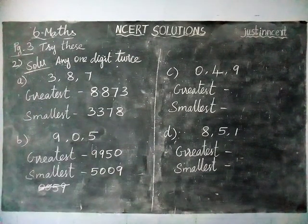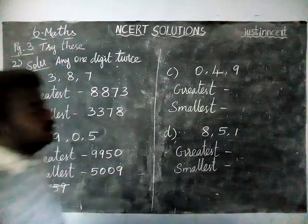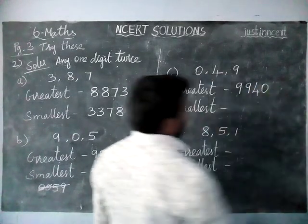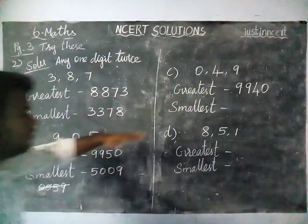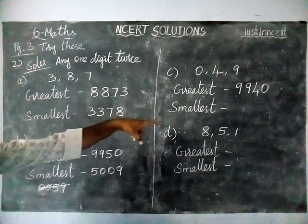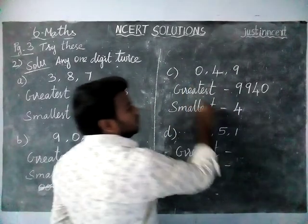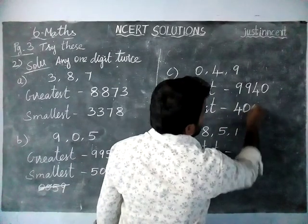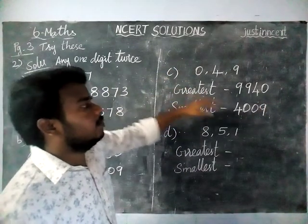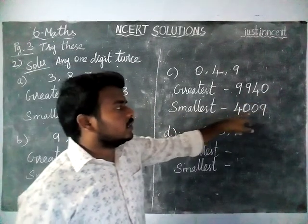Next, option C: digits 0, 4, 9. The greatest number is 9, so we use it 2 times: 9, 9, 4, 0. For the smallest number, applying the same concept from option B — 0 came, so we should not use it in the first place. We use 4 as the first digit, then 0 two times, and the last digit is 9. Greatest number is 9,940 and smallest number is 4,009.